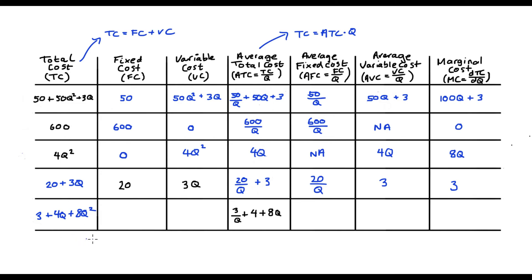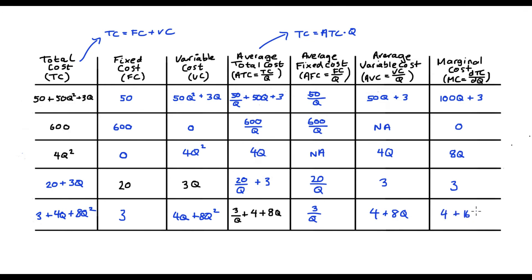Here, fixed cost is 3 — that's the constant. Variable cost is the rest: 4Q + 8Q². Average fixed cost is 3/Q. And average variable cost will be (4Q + 8Q²)/Q, which simplifies to 4 + 8Q. Our marginal cost — we take the derivative of our total cost function again. The 3 drops out, 4Q becomes 4, the 2 comes out and multiplies 8 so we get 16Q.